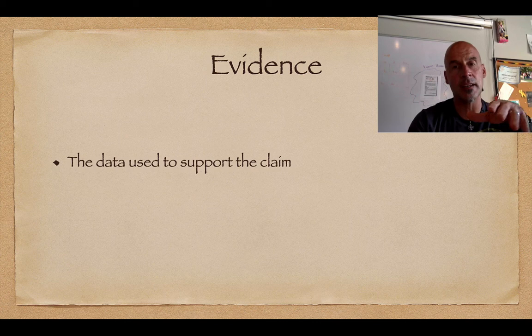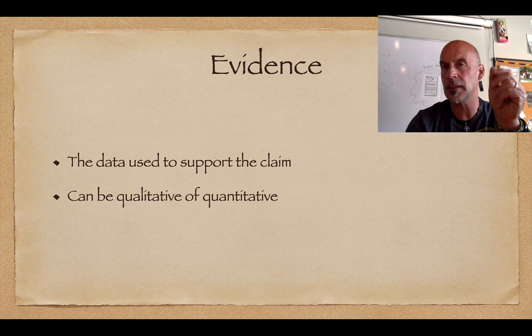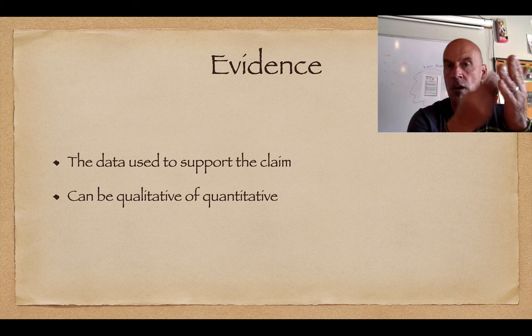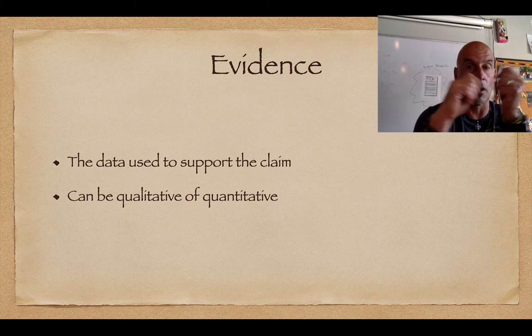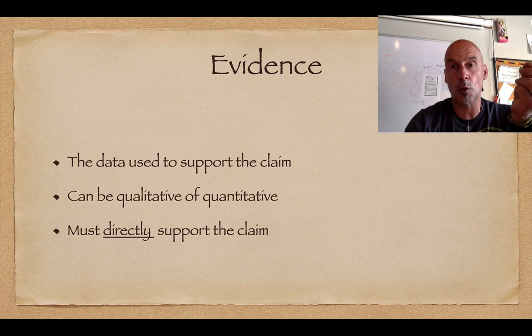The evidence is the data that is used to support your claim. It can be qualitative or quantitative. Qualitative is the quality of your data — for example, the poodle's hair was soft, or the poodle's hair was coarse. Quantitative is where you're using hard data — for example, the poodle's hair was six millimeters long, or twelve millimeters long. Quality versus quantity — qualitative versus quantitative. It must directly support your claim.